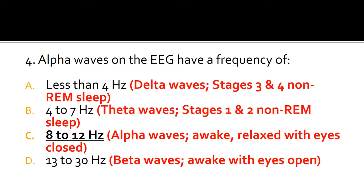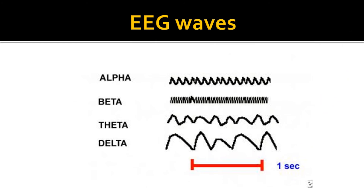Delta waves, which are prominent during stages 3 and 4 of non-REM sleep, have a frequency of less than 4 Hz, while beta waves have a frequency of 13 to 30 Hz. Alpha waves are seen when the person is awake but relaxed with eyes closed. Beta waves are seen when the person is awake with eyes open. This is a pictorial representation of the four types of EEG waves.